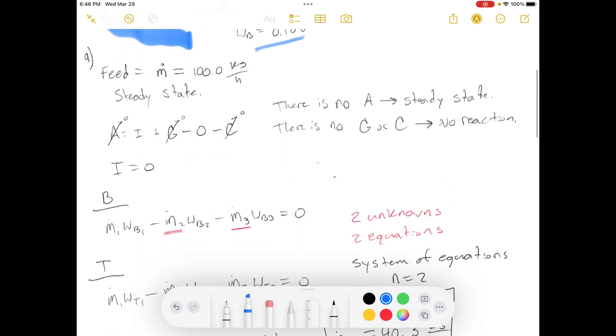So for part A, we have the feed is kg per hour. We don't have any accumulation because this process is at steady state. We also get rid of generation and consumption because there's no reaction going on. So, nothing is being generated or consumed. So, all we have is in equals out.